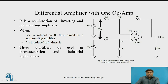When Vx is reduced to 0, it is grounded, leaving only source Vy connected to the non-inverting terminal, so the combination becomes a non-inverting amplifier. Similarly, when Vy is reduced to 0, that terminal is grounded, leaving only Vx connected to the inverting terminal, so the circuit becomes an inverting amplifier. This is why it contains both inverting and non-inverting amplifier combinations in a single circuit.